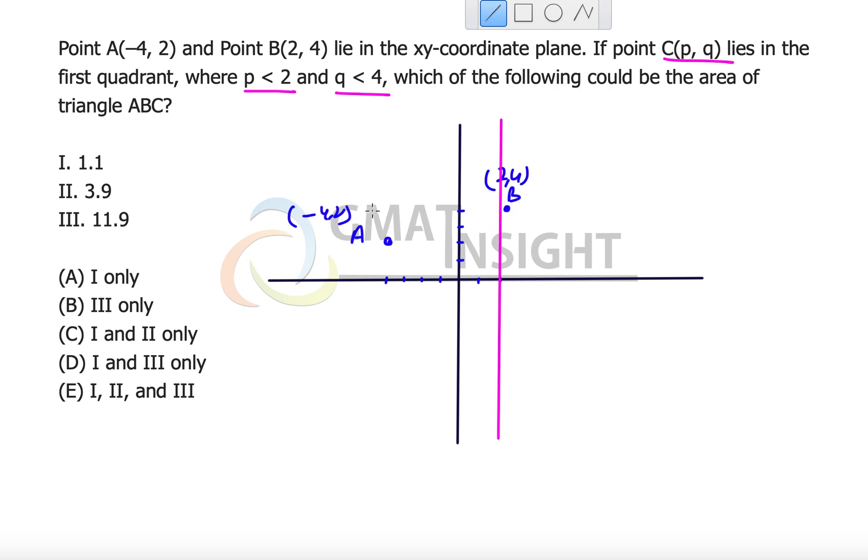Y-coordinate should be less than 4. Drawing another line so that the point is below this line, which means the third point has to be somewhere within this quadrilateral, because this is q equal to 4. Anything below this will be q less than 4. For this, p is equal to 2, the valid region will be to the left of it. So we have this particular region in which the third point must lie.